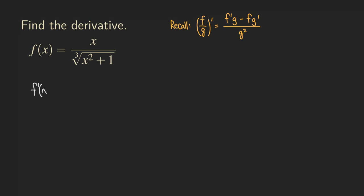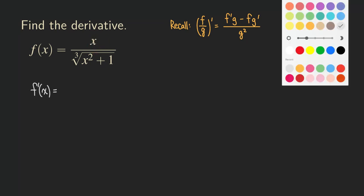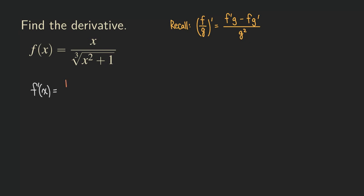So f prime of x is equal to — first we are going to take the derivative of the top function. The derivative of x gives us 1. And then for the bottom function g, we are just going to copy it. So 1 times the cube root of x squared plus 1.